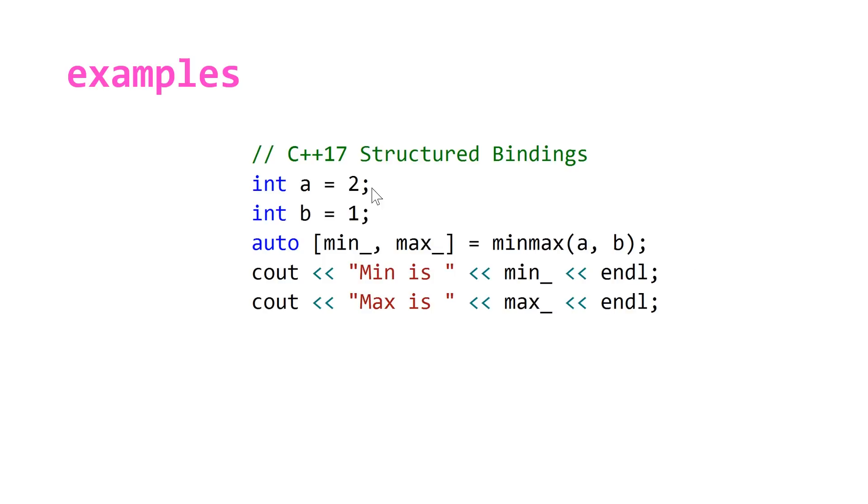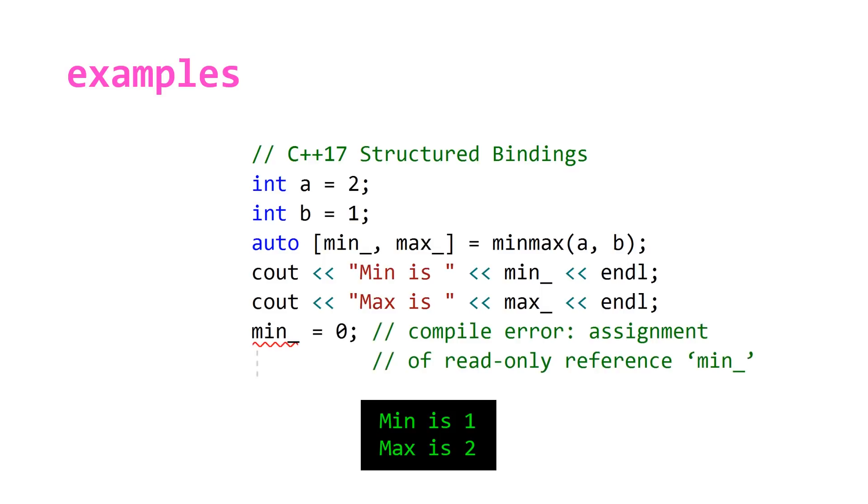Note that because we're using type inference here, the type is going to be deduced to what is returned by the minmax algorithm. So if we were to try to reassign to one of these variables we'd get an error. This code outputs min is 1, max is 2, and if you were to try and add something like this you'd get a compile time error because min and max underscore are both references.